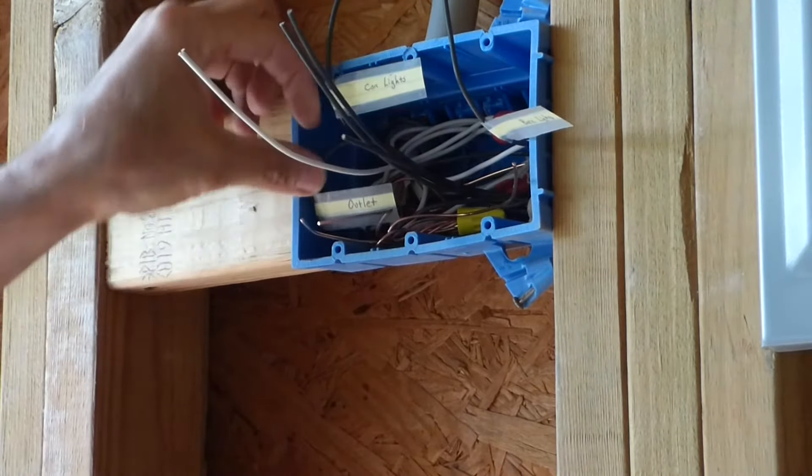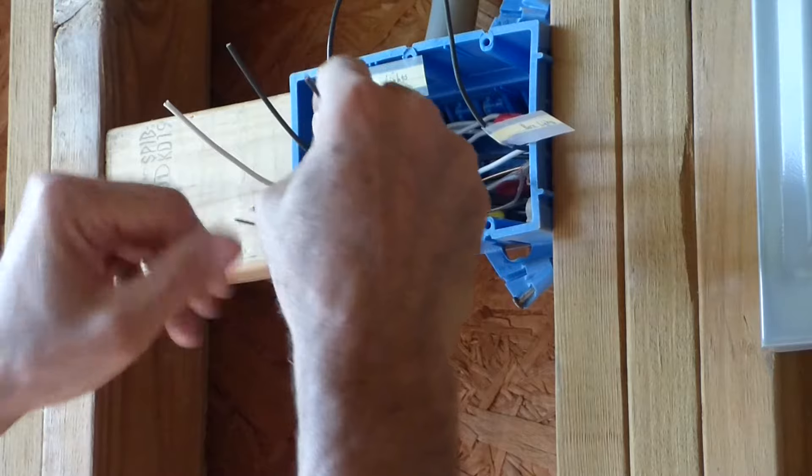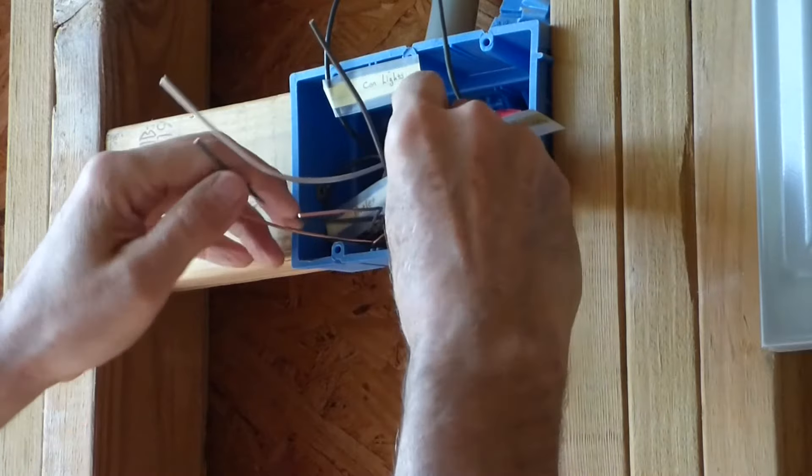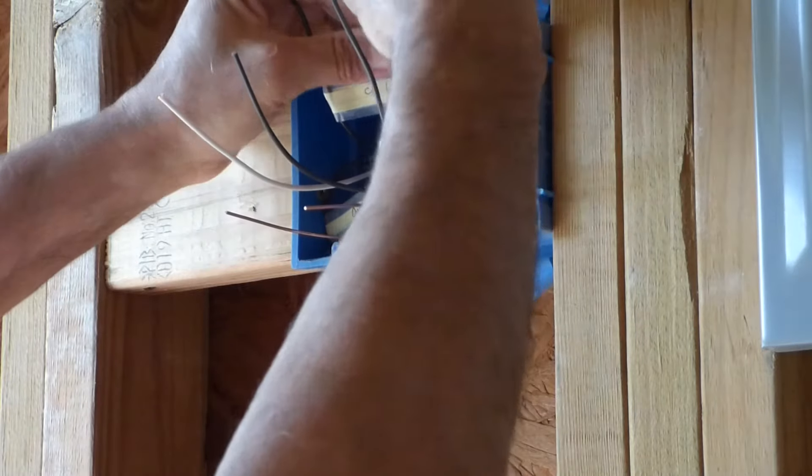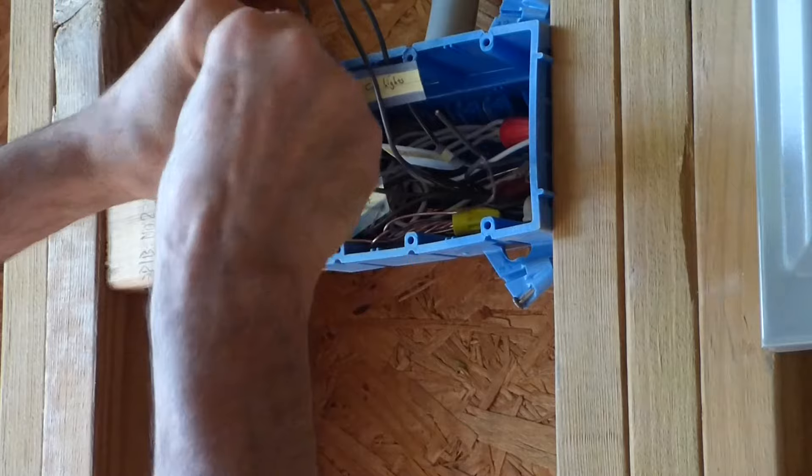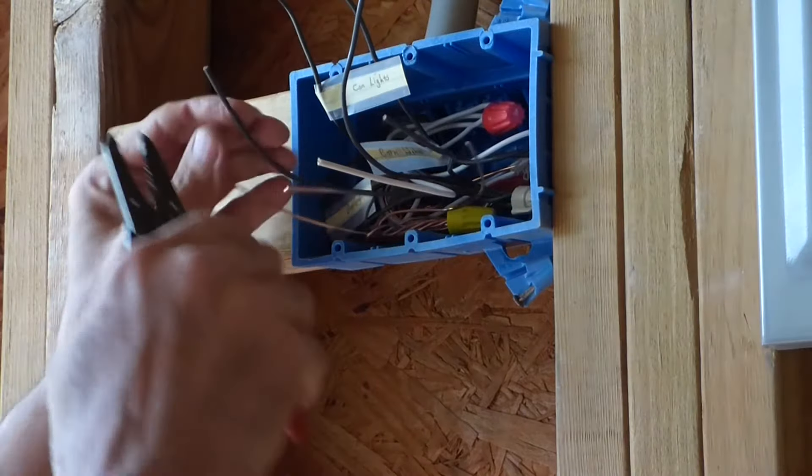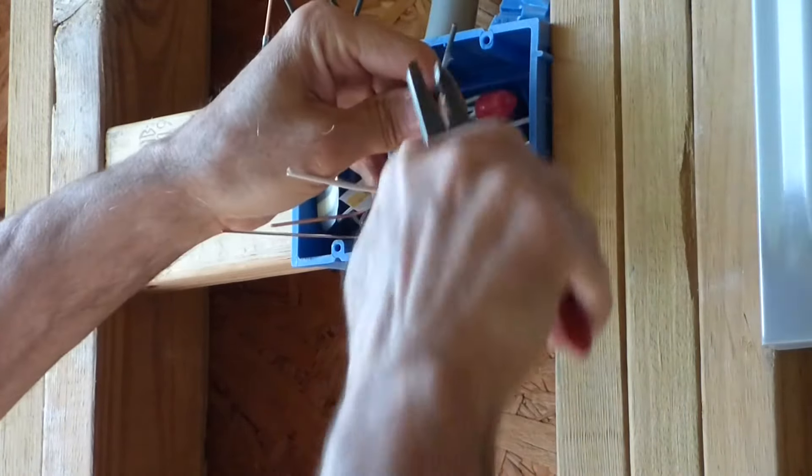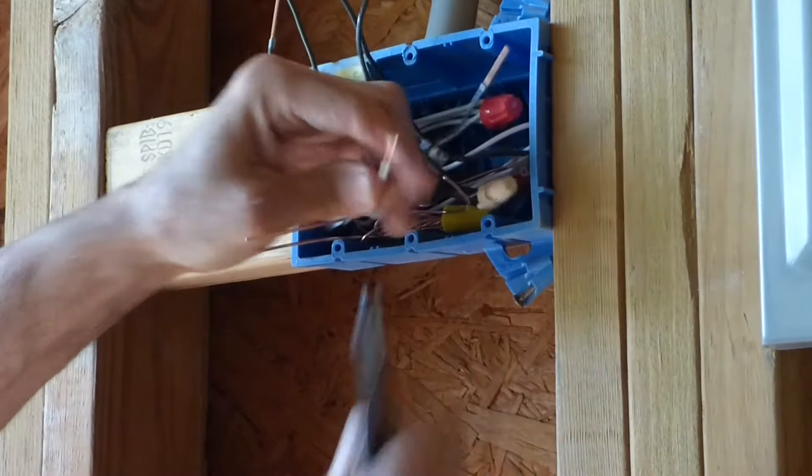Now all we need to do is wire these up. This is all the hot down here. Of course, the ground there. And then these are the outgoing to the can light switch and the barn lights overhead. And then this one neutral wire goes to the outlet over here.